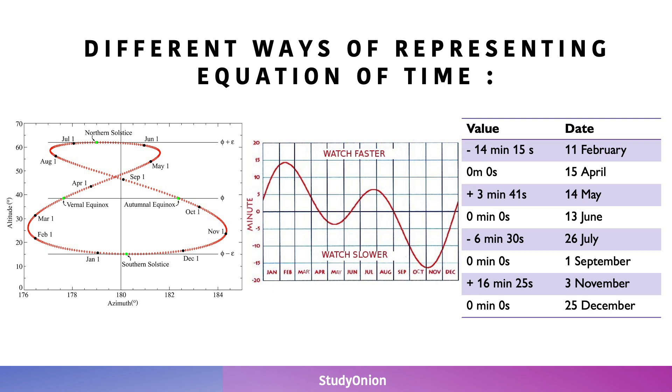There's also a graph of EOT, which is the middle one, and that basically shows you what the EOT is. And finally, the diagram on the left-hand side is called an analemma, which shows you the same thing in relation to the altitude and azimuth of the sun.